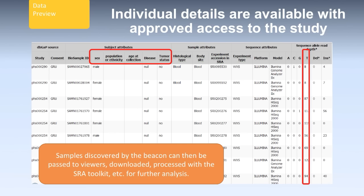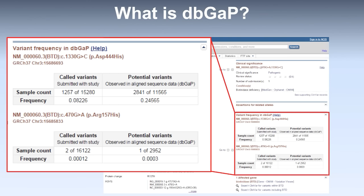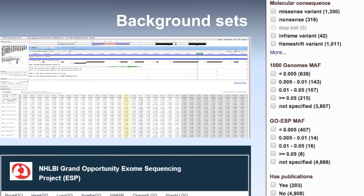If one has approved access to particular studies, one should be able to go in and look at data for particular individuals. We are also putting aggregate dbGaP data in ClinVar. In a ClinVar page, we can now see variants in dbGaP — those called by dbGaP submitters as well as the ones we see in aligned sequence data. There are also background sets for short nucleotide variation derived from the 1,000 Genomes and GoESP. We are working to expand those background sets into larger areas of dbGaP, as you saw with the recent ClinVar example.